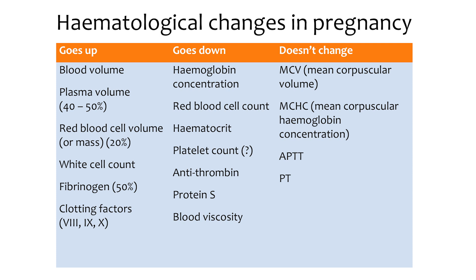Pregnancy is associated with a hypercoagulable state, which is why pregnant women are more likely to have a DVT or PE. So it will not surprise you to find out that there is an increase in pro-coagulation factors including fibrinogen and protein factors 7, 8, 9, and 10. On the other hand, there is a fall in concentrations of endogenous anticoagulants such as antithrombin and protein S. Despite all these changes in coagulation factors, there is no change in APTT or PT.